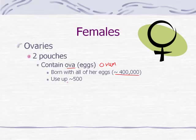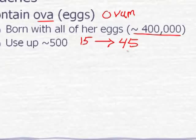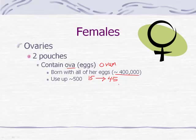Over the course of a lifetime, she's only going to release about 500 of those eggs. Not every month is one egg released - sometimes it's two. But if the typical female matures sexually at age 15 and releases an egg about once per month until the age of 45 when they reach menopause, that's about 30 years of releasing roughly 12 eggs per year. You do the math and it gets you close to about 500. So if you've got 400,000 and you're only going to use about 500, you won't run out.